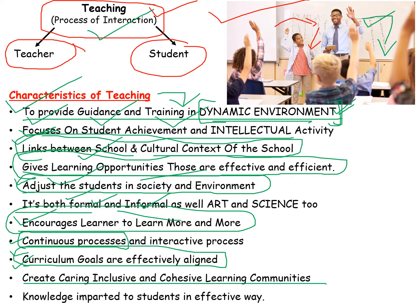It is necessary that you have community-based learning and involvement in the classroom system. Knowledge is imparted to students in an effective way. If students don't understand something, you have to explain it clearly. Explaining things in an effective way is a key characteristic of teaching, and knowledge impartment is also a very useful aspect.